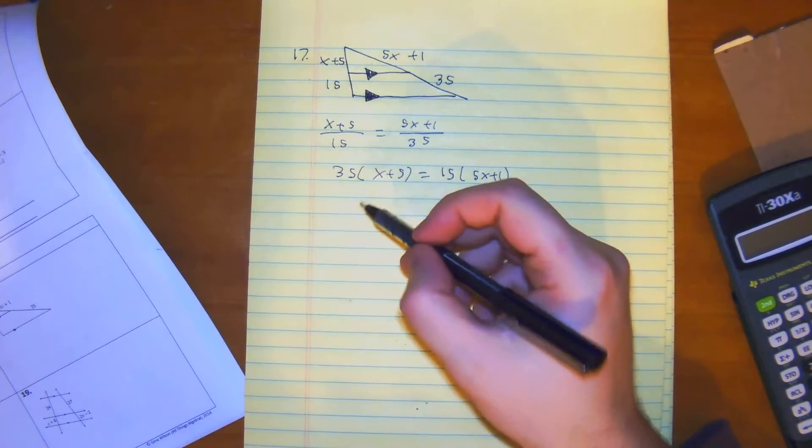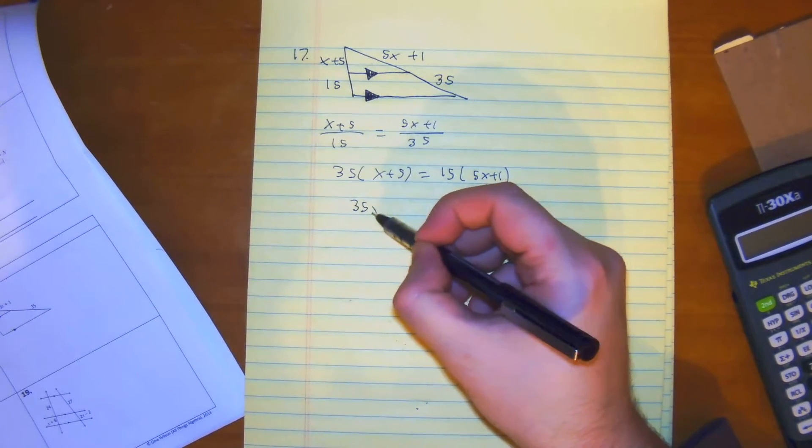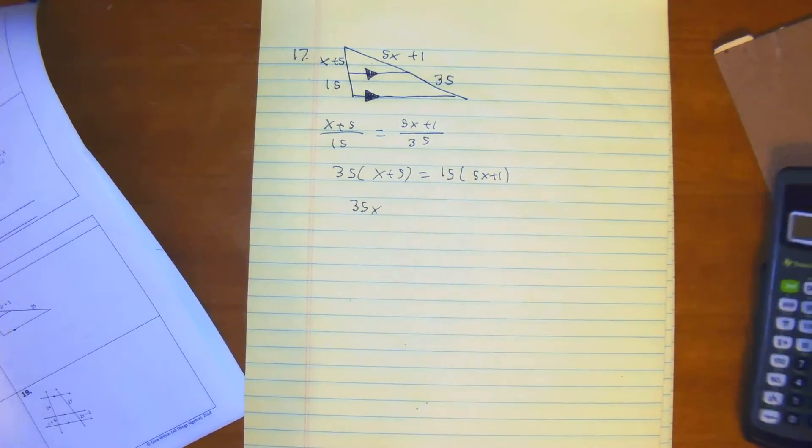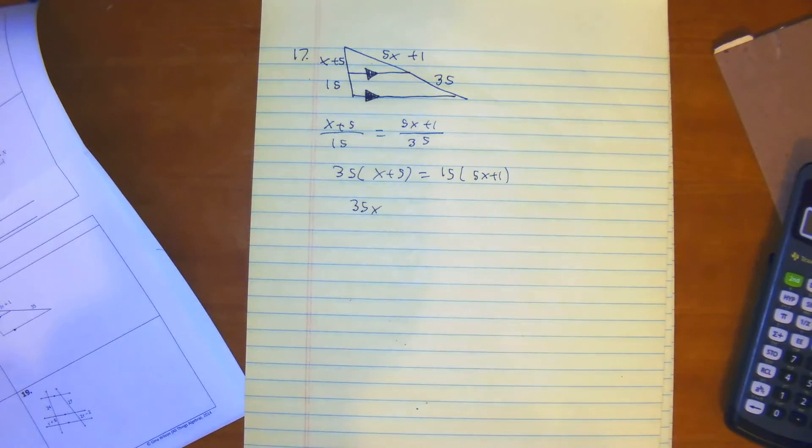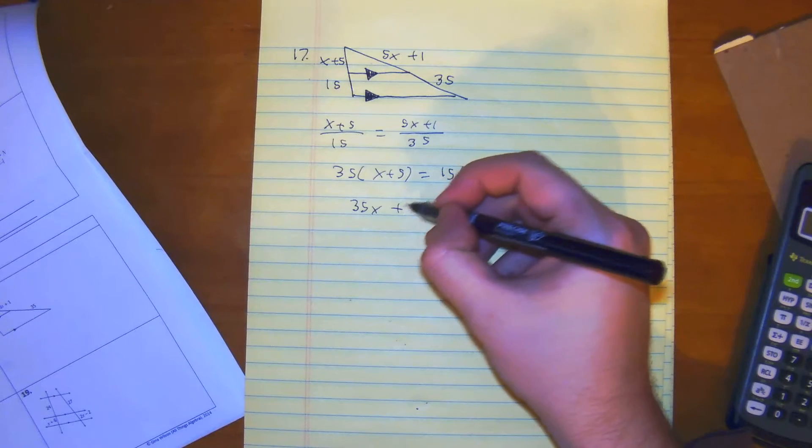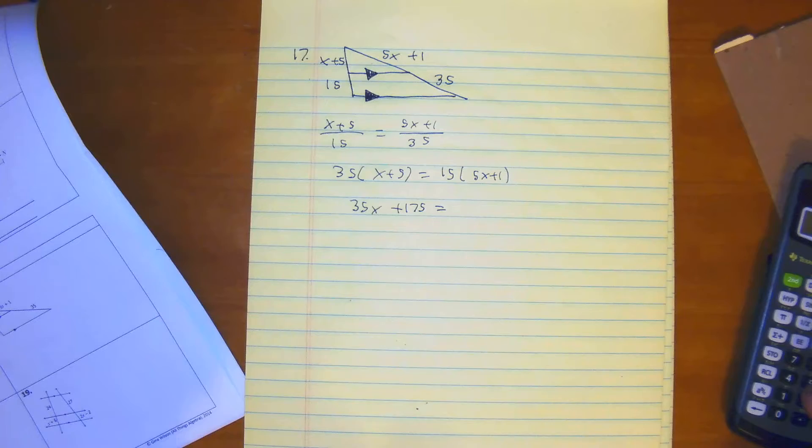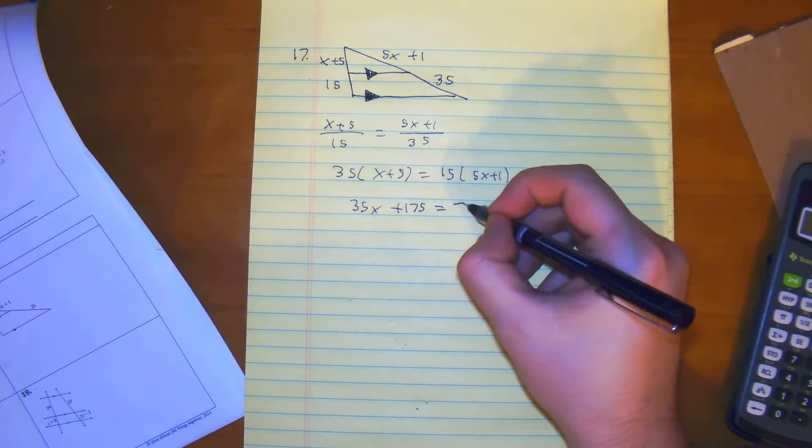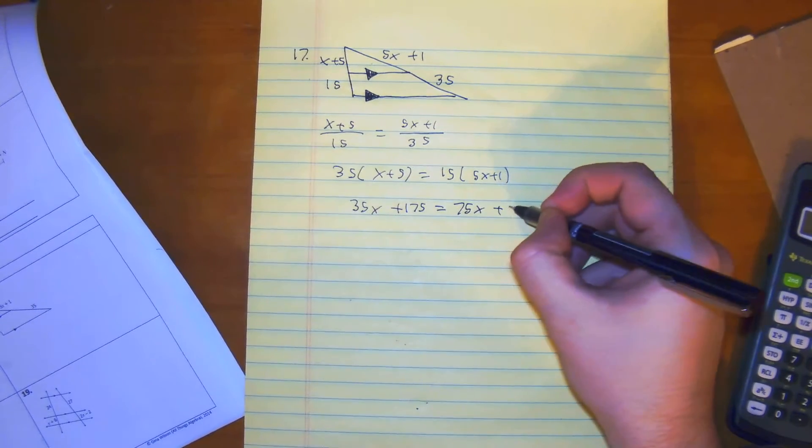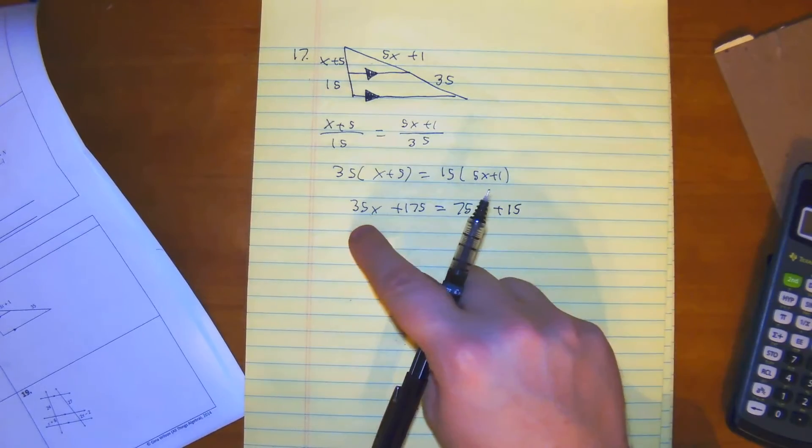From here, we're going to distribute, so we have 35x, and then 35 times 5 would give you plus 175 is equal to 15 times 5, would give you 75x plus 15.